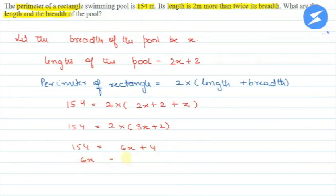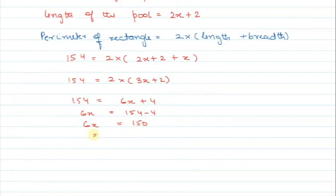So now 154 is equal to 2 into 3x, 6x plus 4. Now 6x is equal to 154 minus 4.